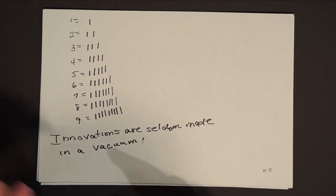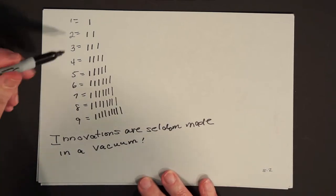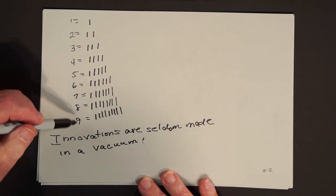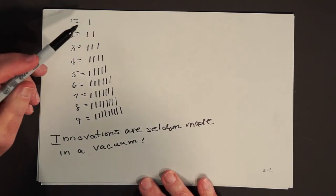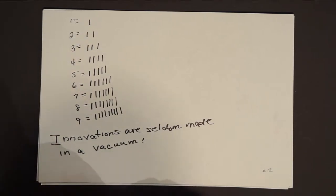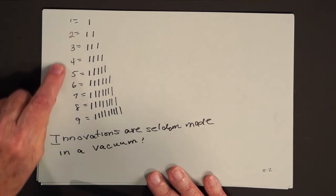What the Semitic people did is they invented strange symbols — one, two, three, four, five, six, seven, eight, nine — to stand for one tally mark, two tally marks, three tally marks, and so on. This looks very abstract, but remember that innovations seldom take place in a vacuum. These symbols are abstract, but how about the X, the C, and the M? They're abstract also. There's no way of looking at an X and knowing it stands for 10 — you have to learn that.